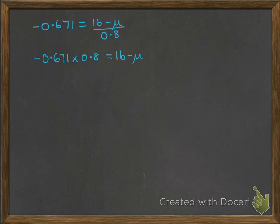And we'll just take this over to the next page to see what to do with it. So we're rearranging, we'll multiply over by 0.8, that becomes minus 0.5368. Then from there we will subtract the 16 from both sides, and we get it equal to minus μ.